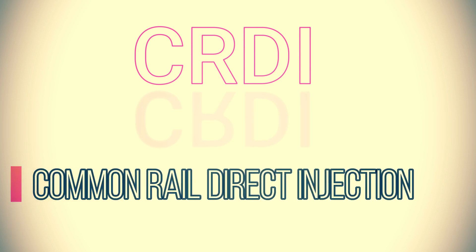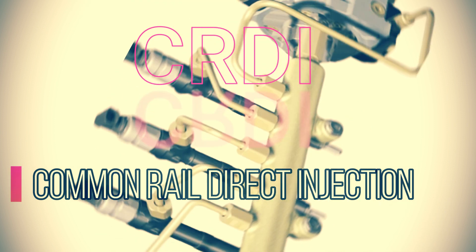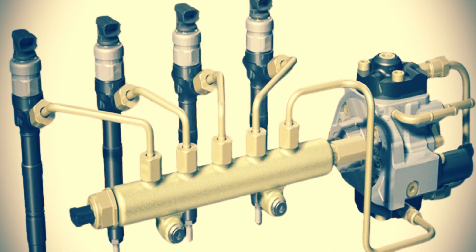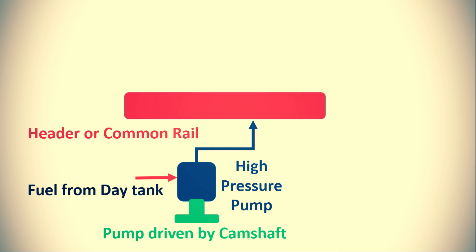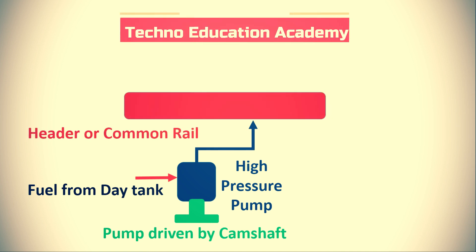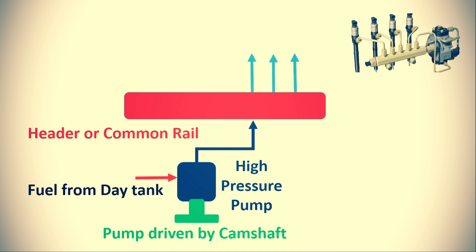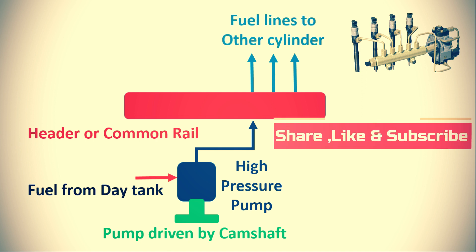CRDI is a fuel injection system which is used in diesel engines. In this fuel injection system, there is a single high pressure pump which supplies high pressure fuel to a common rail or header. The accumulator or the common rail is connected to different cylinders by separate fuel lines through the fuel nozzle, as shown in the figure.